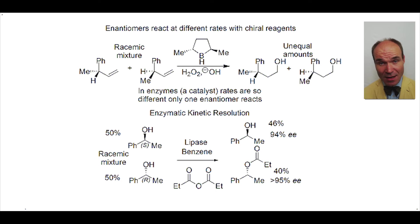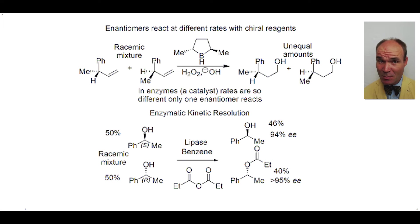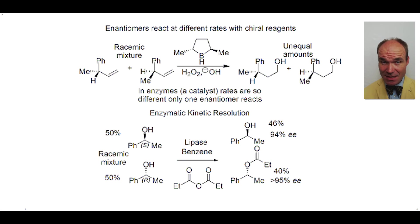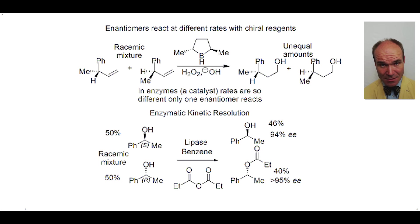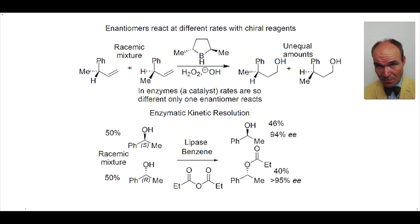The disadvantages of enzymatic kinetic resolution: you want 100 percent of the desired enantiomer, not a maximum of 50 percent. But there are ways around this. Under dynamic kinetic resolution, the starting enantiomers are being interconverted throughout the reaction, allowing not 50 but 100 percent of the desired product.